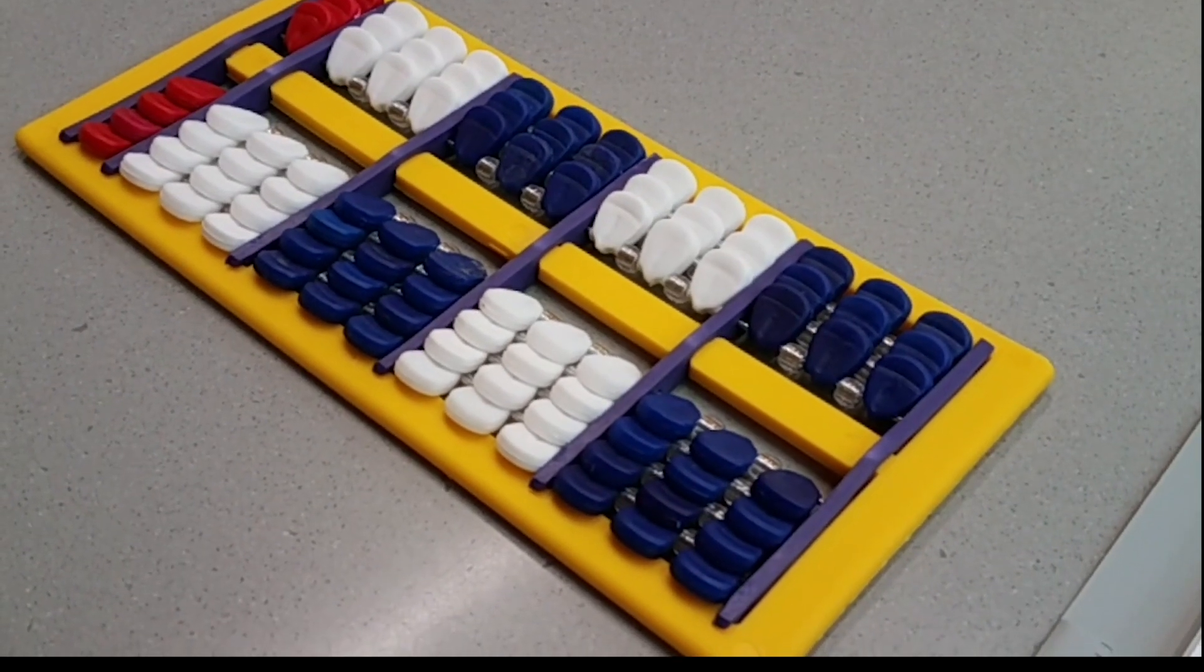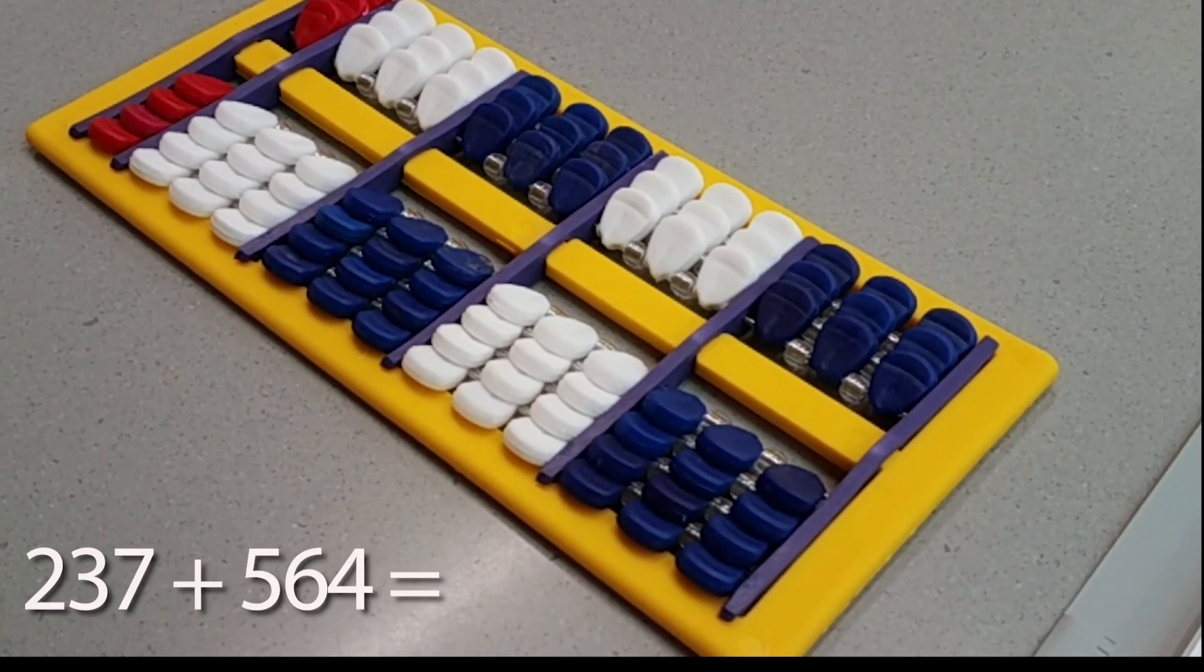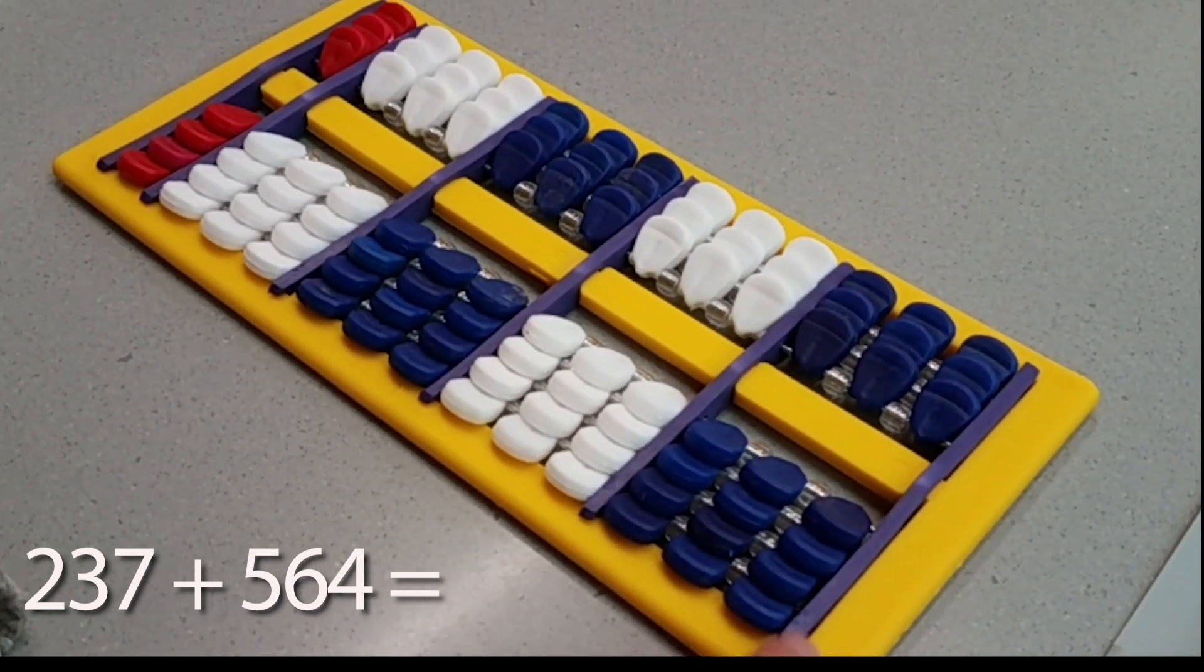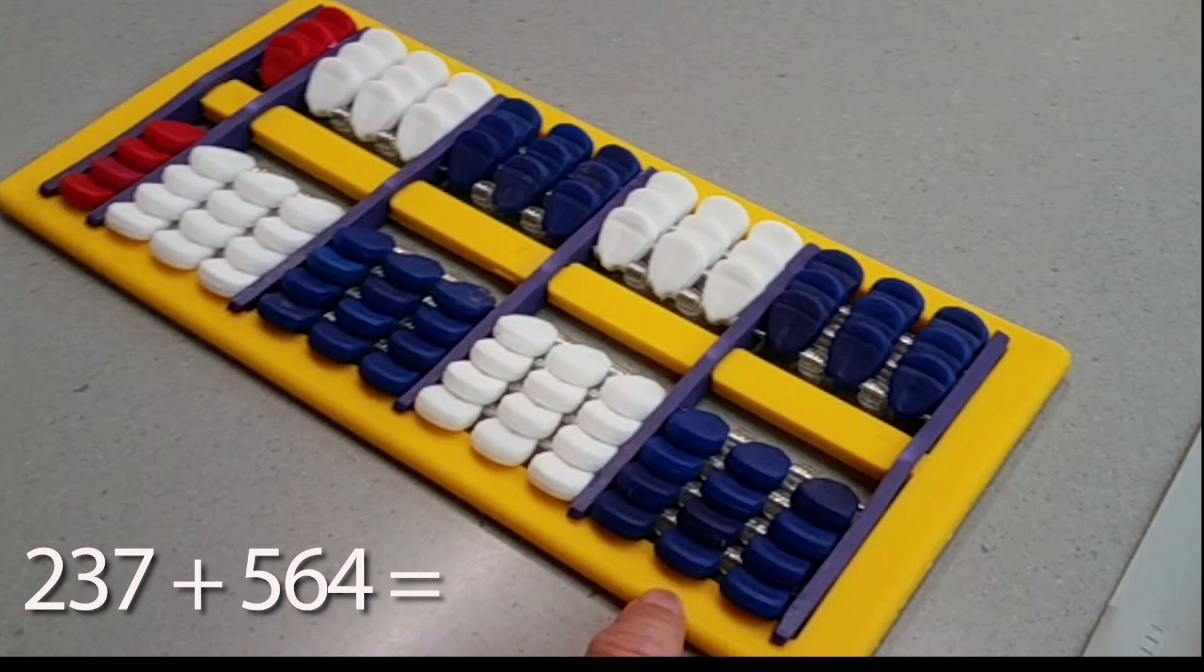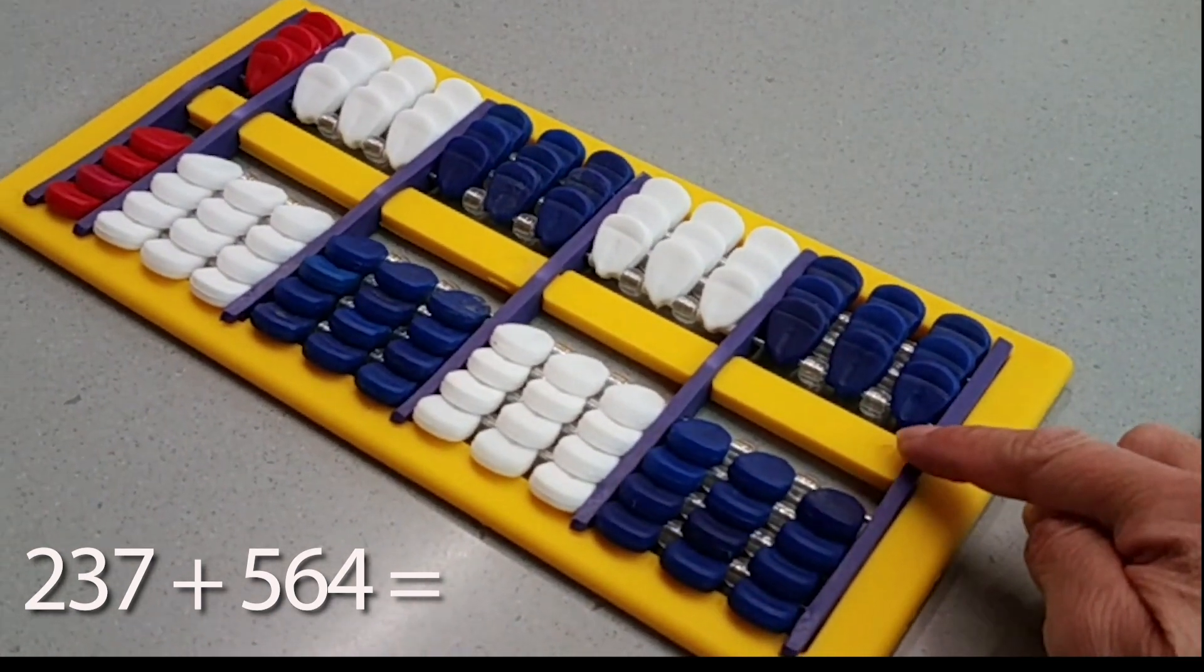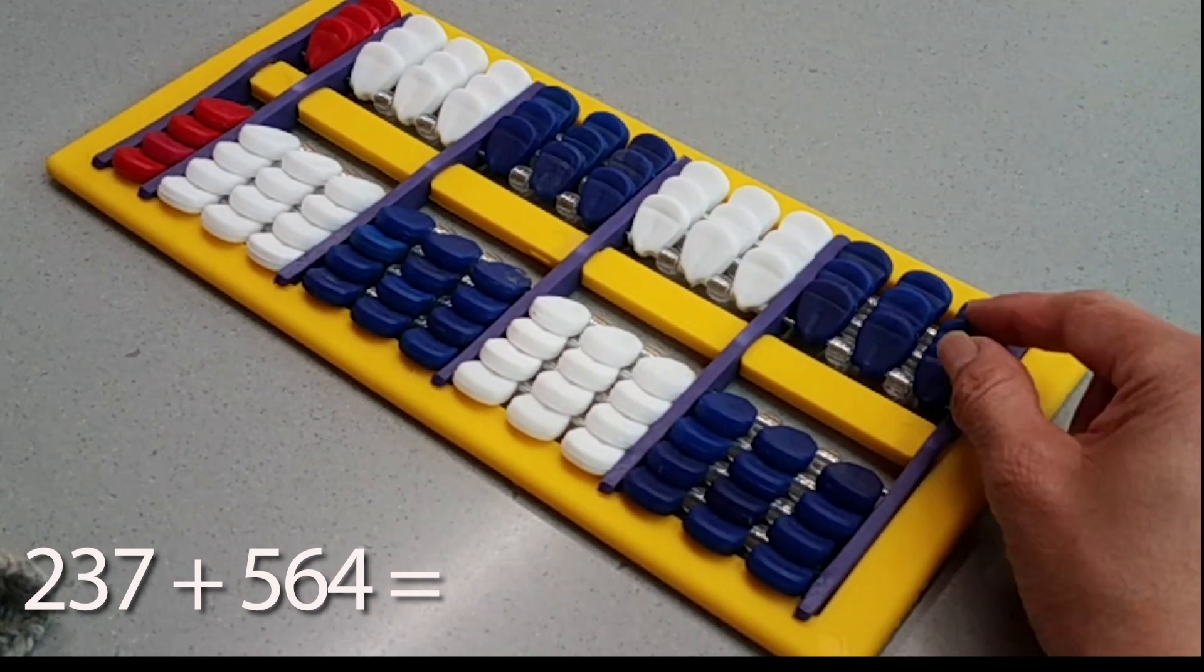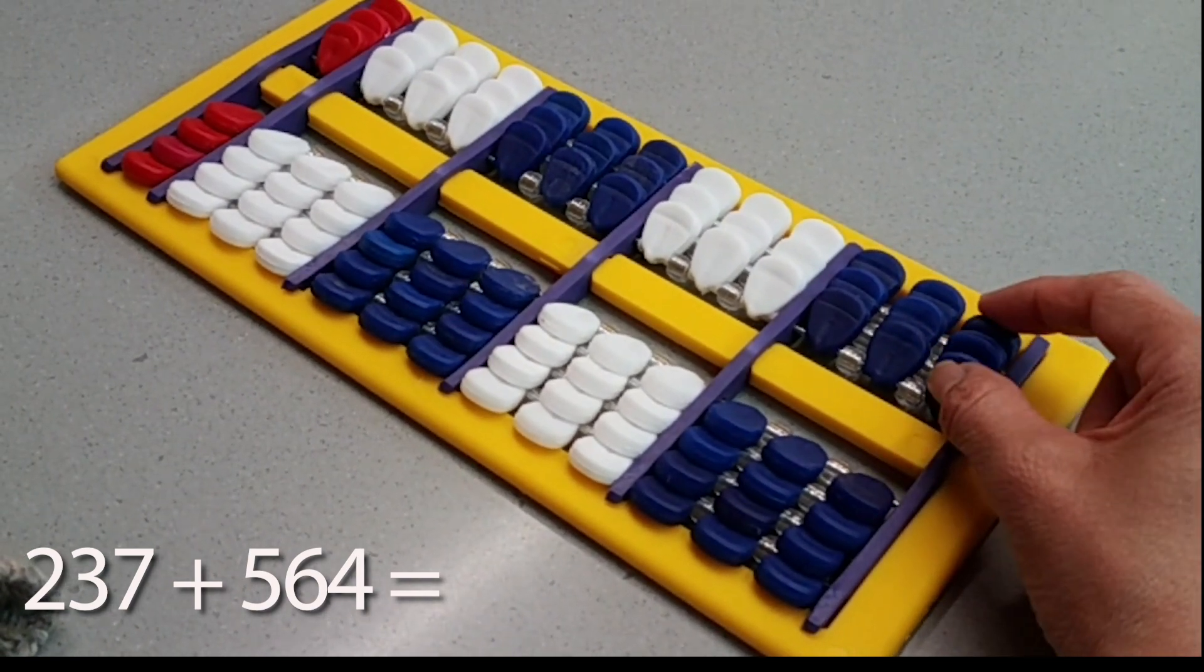Okay, so we're going to add 237 to 564. So on the nepo, we need to represent the 237 first. Anything above the yellow line is a five piece. So this is five. Two pieces is a ten. Three pieces is fifteen.